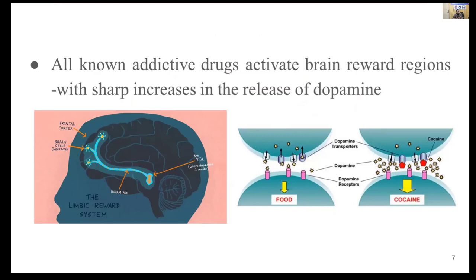Whenever a substance is taken by a particular individual, it activates the brain reward system. The reward circuitry basically works in the mesocorticolimbic area. When the mesocorticolimbic area is involved, there will be a dopamine surge, and the person will feel persistent euphoria.